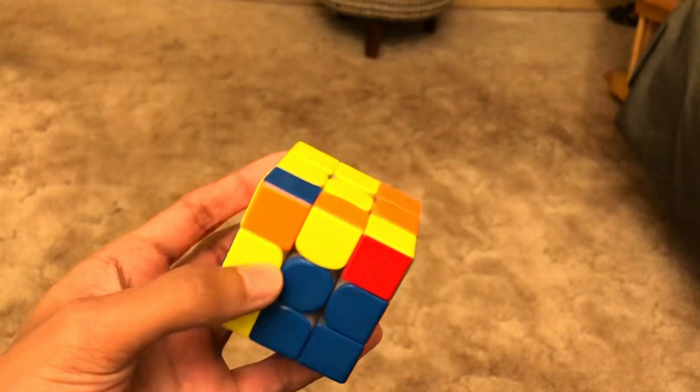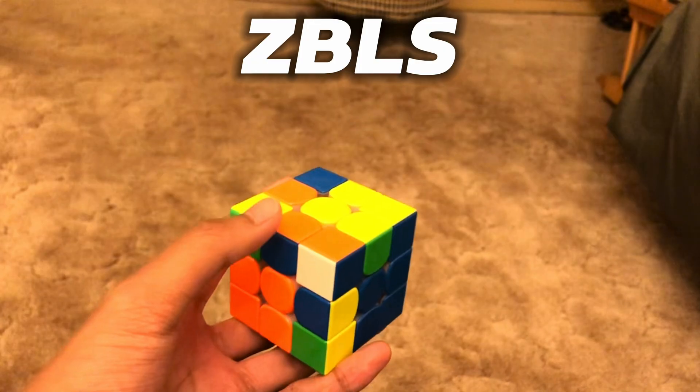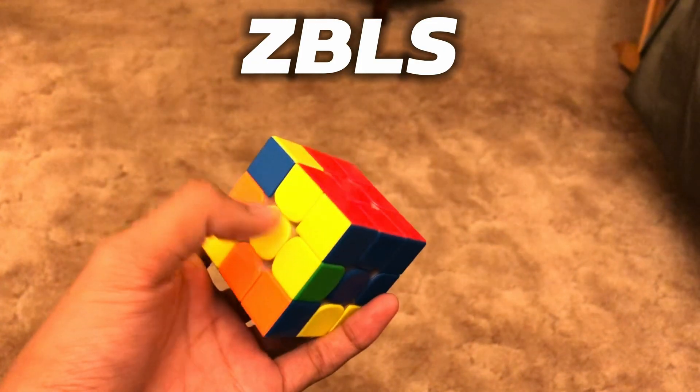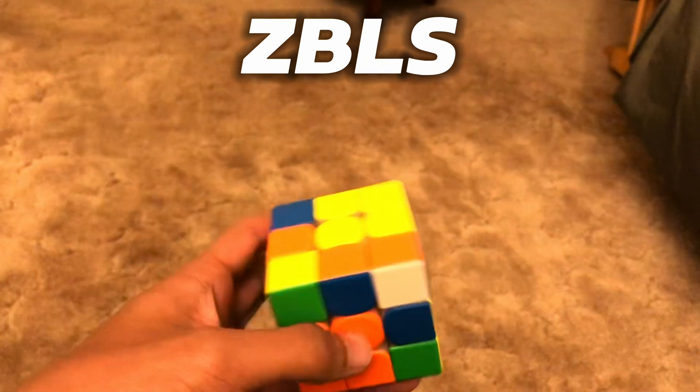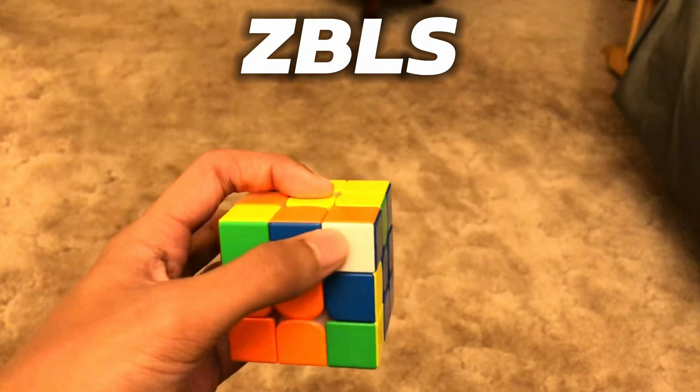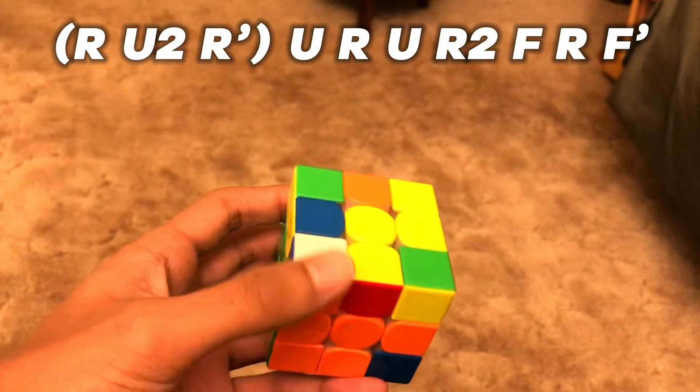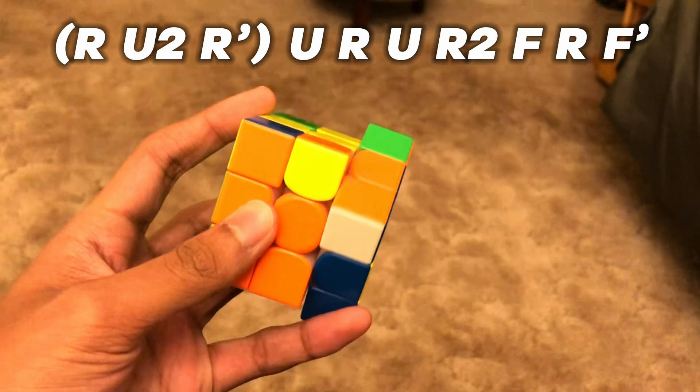And now we have this ZBLS. So we have these two pieces together like this, two oriented edges in the back like this right next to it. So when you have this case you would split them up like this, or U2 R prime, and then now you just solve these two and then do a sledgehammer to insert.